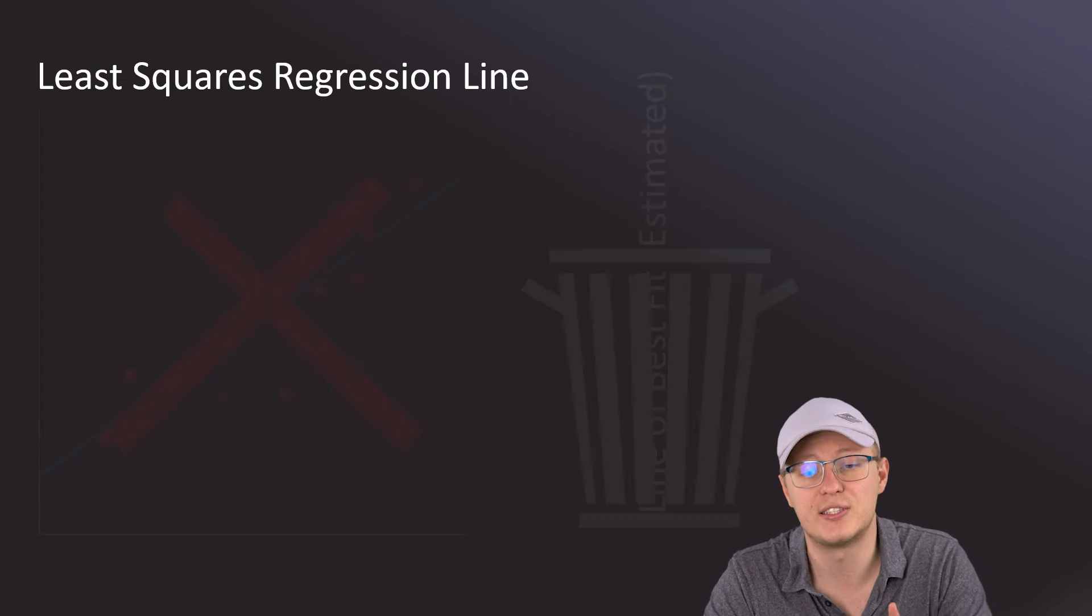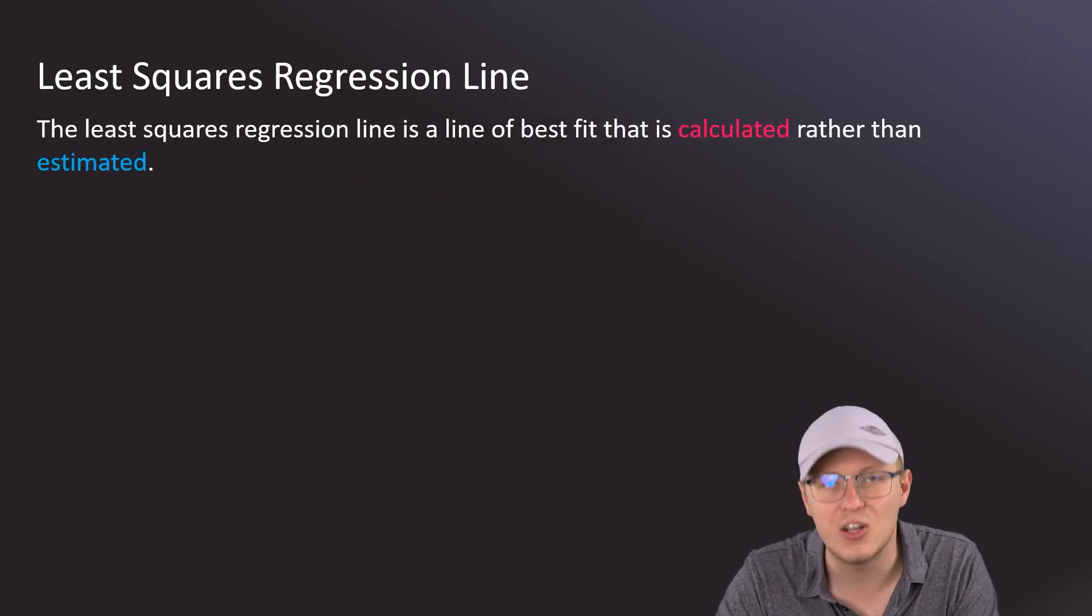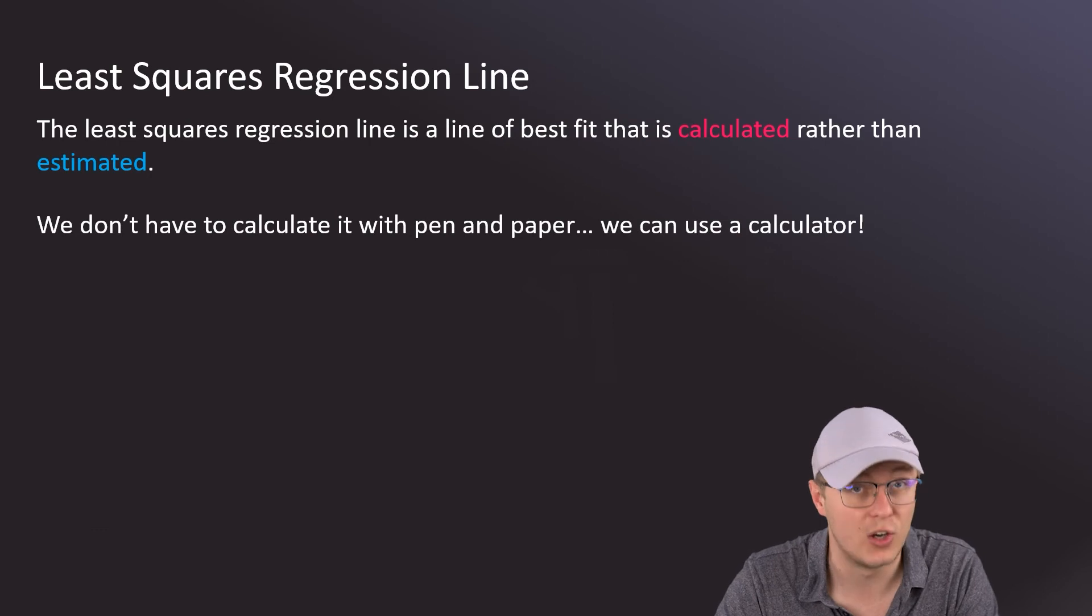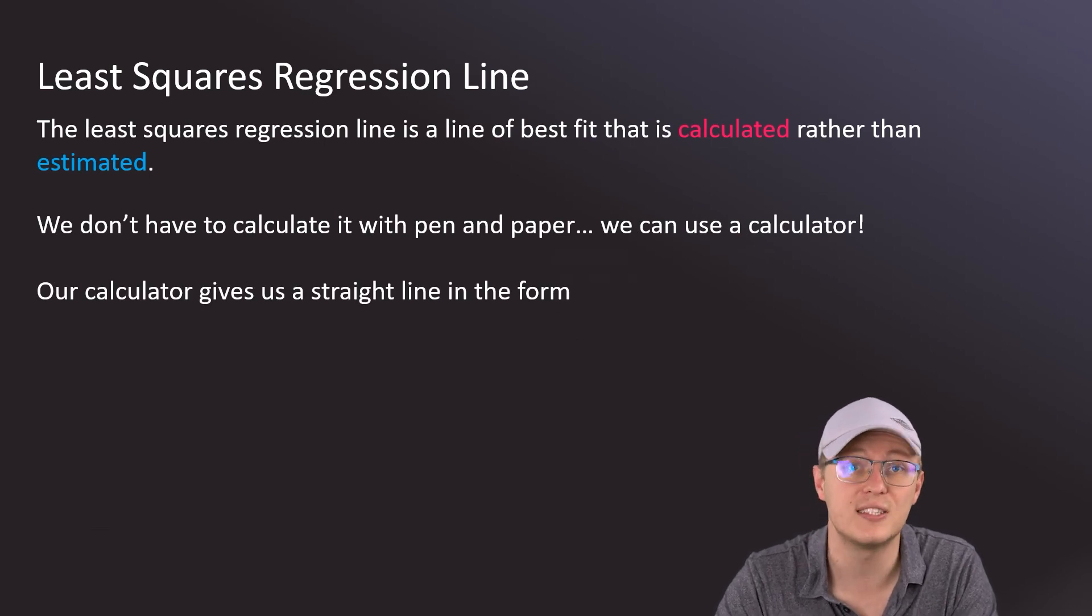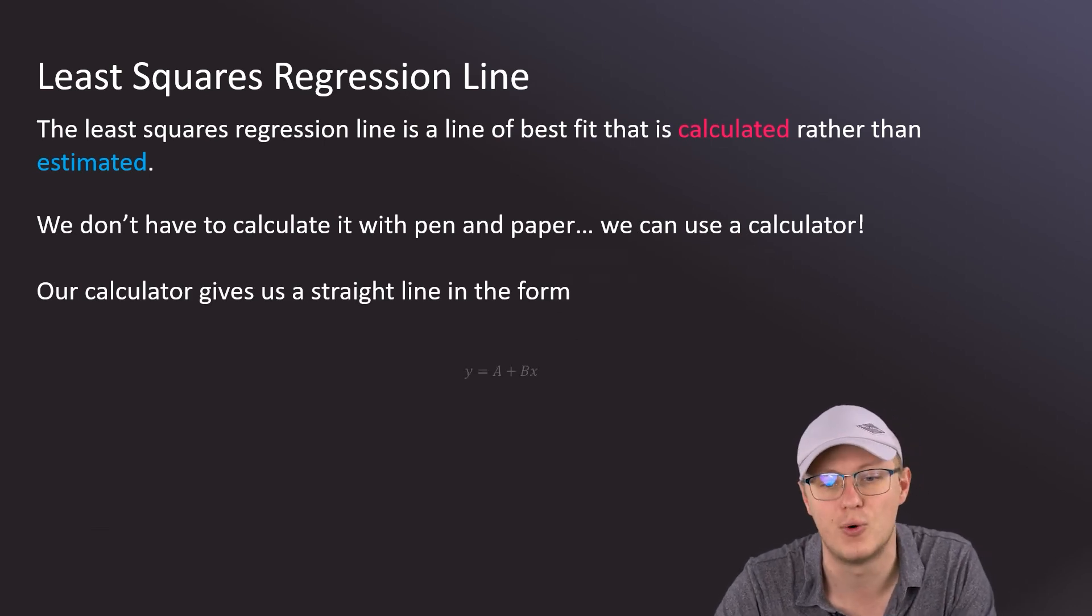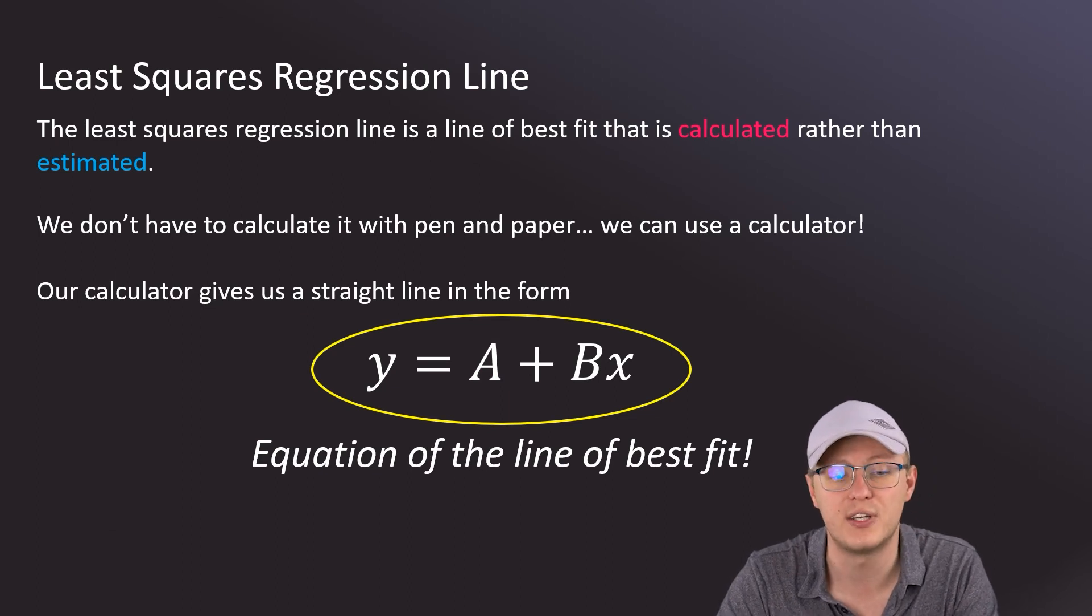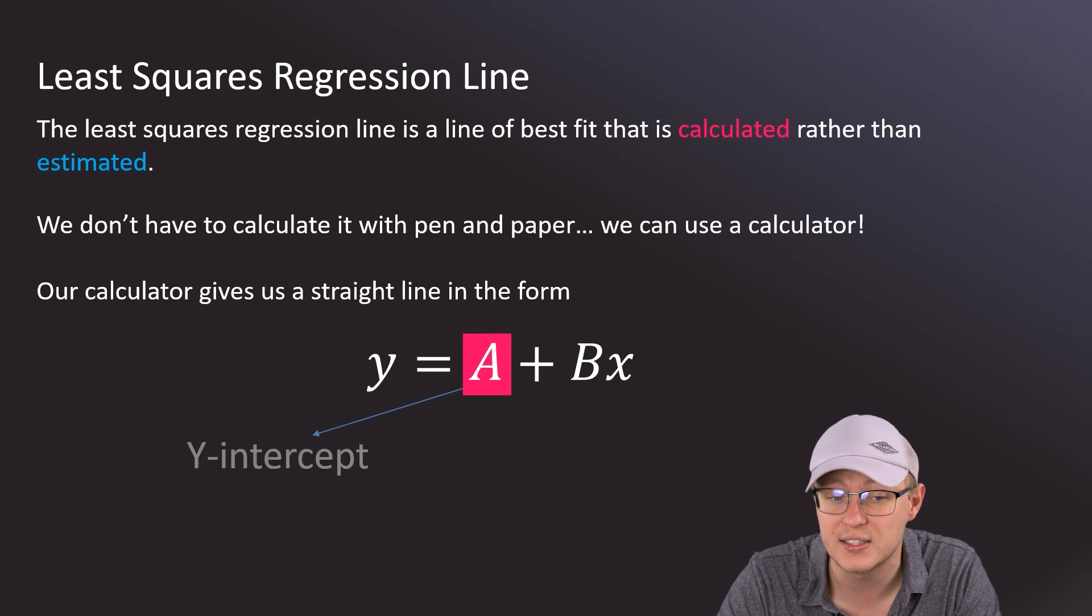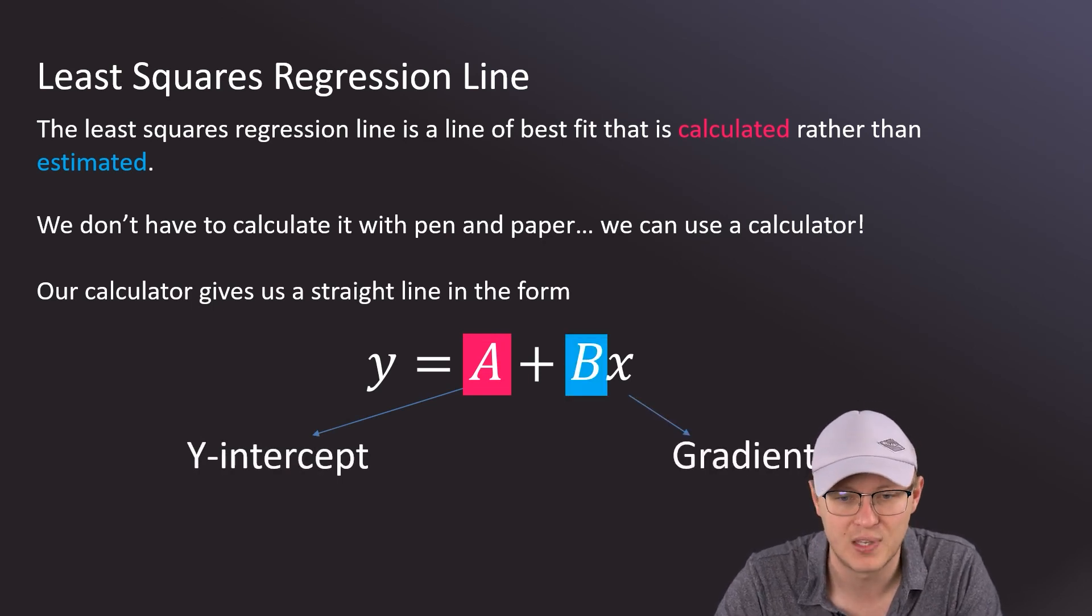The least squares regression line is going to be a line of best fit that we're going to calculate rather than estimate. What's lovely about it is we're not going to calculate it using pen and paper; we're just going to use our calculators. Our calculators are going to give us a straight line in the form y = a + bx, and that is going to be our equation of the line of best fit, where a is the y-intercept and b is the gradient of that line.